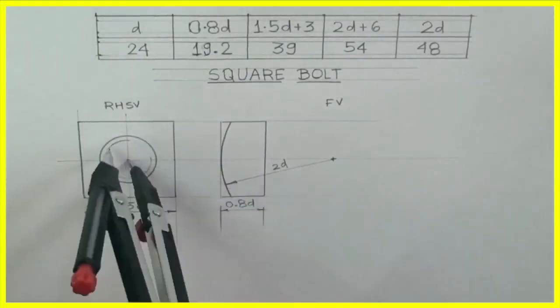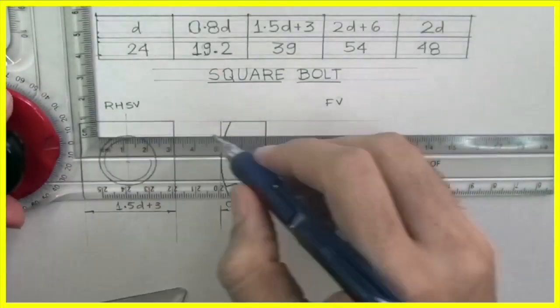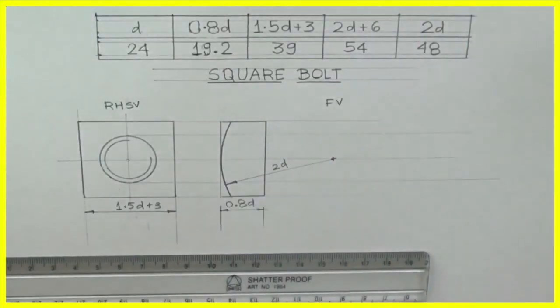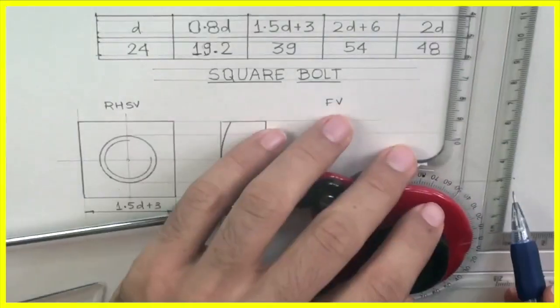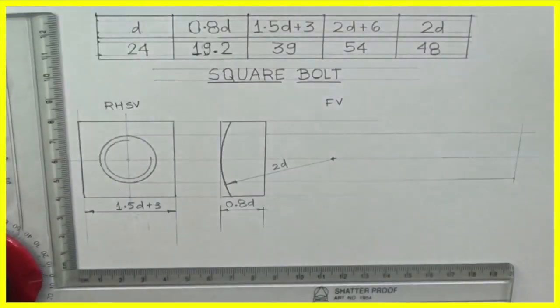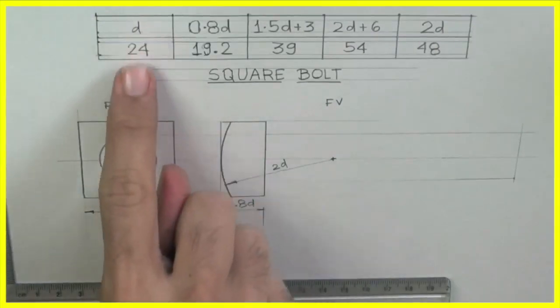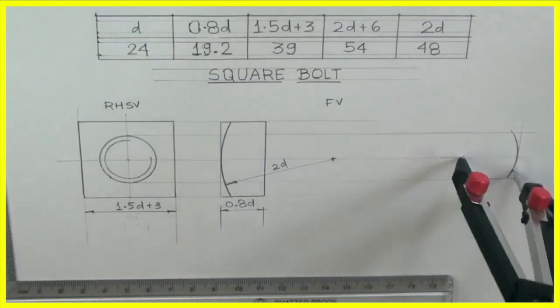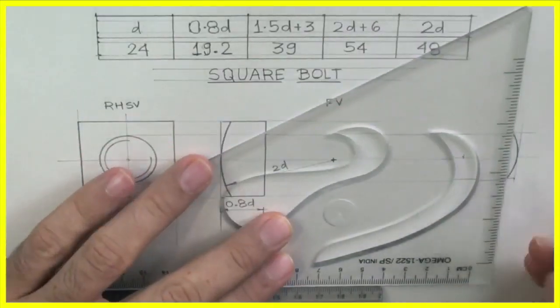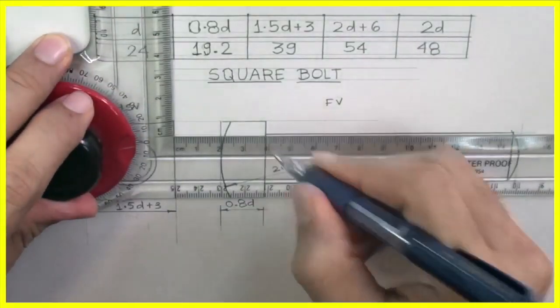That would be 3/4. See we are following first angle, so it will be in first quadrant, the 3/4 one. Now I will take shank length 110mm. So draw 110, then take d equals 24 and draw radius like this. Draw vertical line and draw this thread.